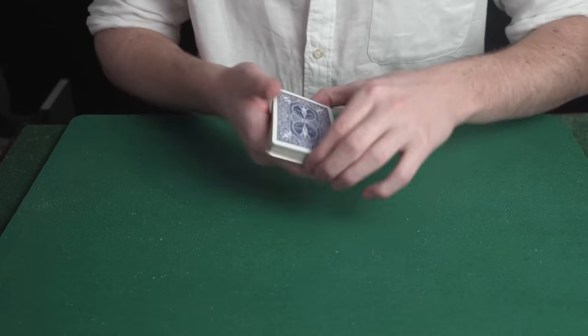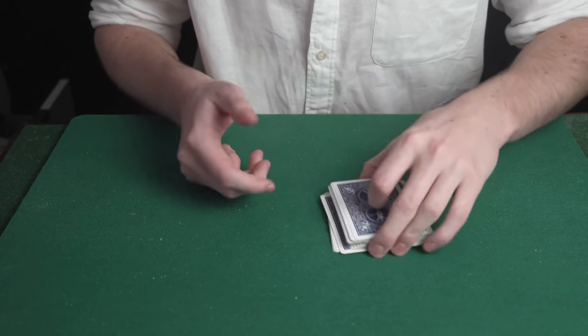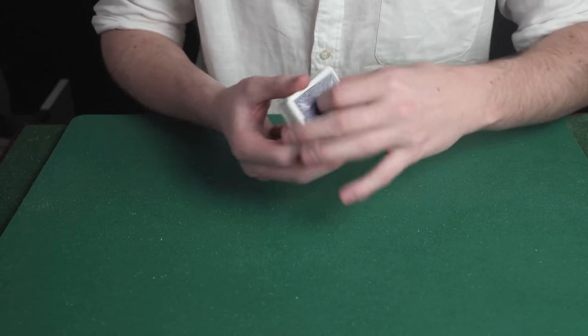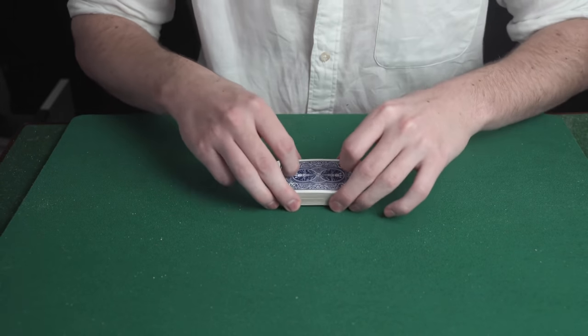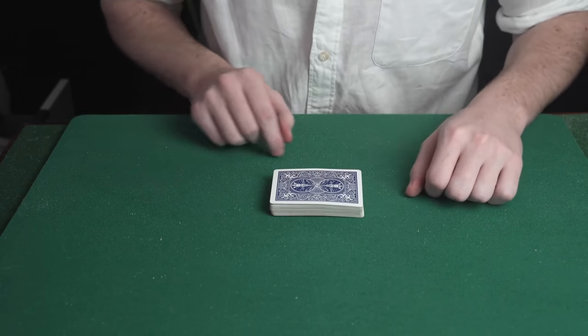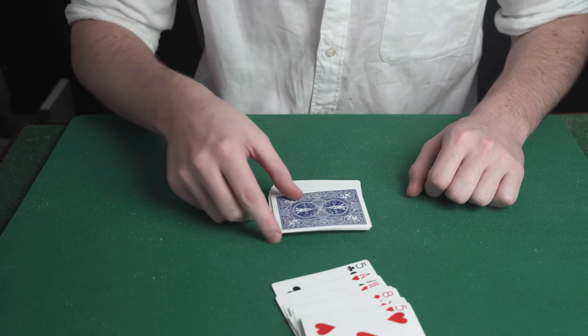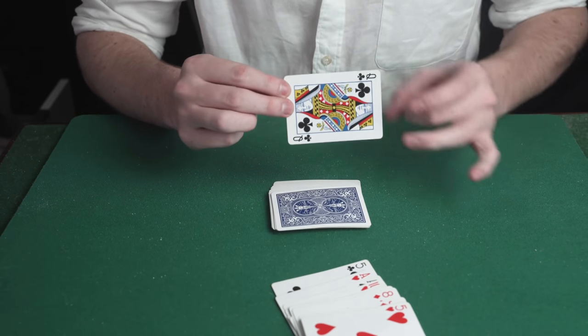This is then cut into the deck fairly. The magician says he will find the spectator's card in a strange way. He takes his finger and flicks the deck. The next card down is the spectator's Queen of Clubs.